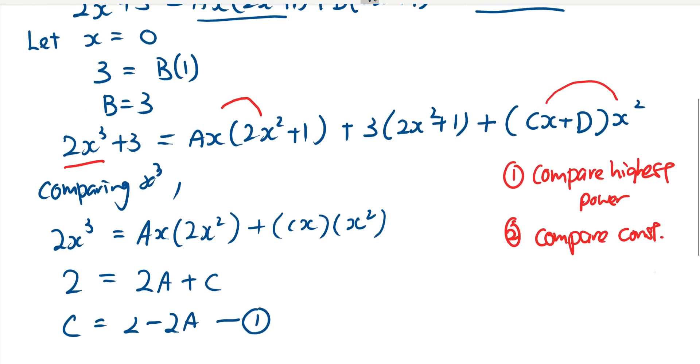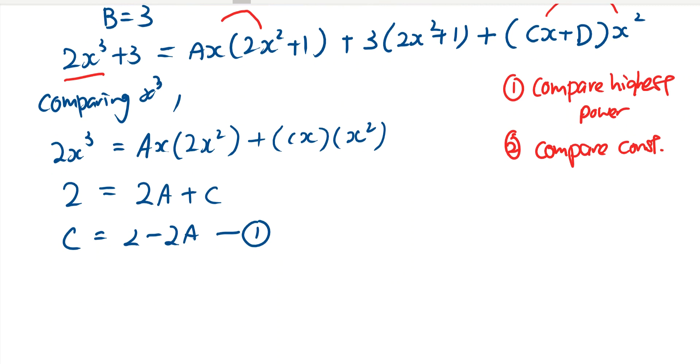Next, I compare constant. On my left hand side, comparing constants, the constant is equal to 3. So I'll write down 3 equals. Then I'll go back to over here. How do I see if I can make any constant? Ax times this will not be a constant.